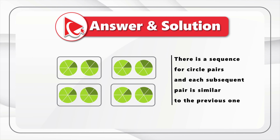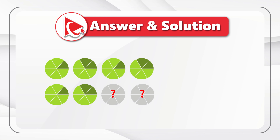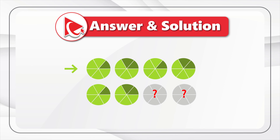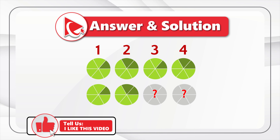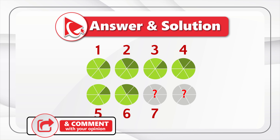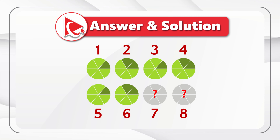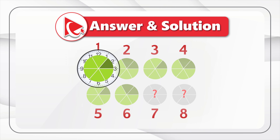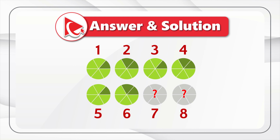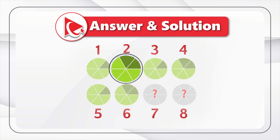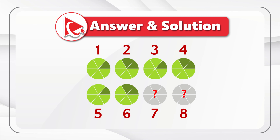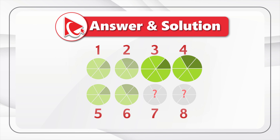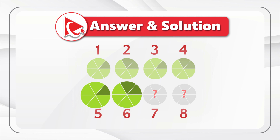Let's take a close look. To better understand the pattern, let's give each circle a unique number. Starting with the top row, the numbers would be 1, 2, 3, 4, and the bottom row circles will have numbers 5, 6, 7, and 8, with 7 and 8 being our missing pair. If you look closely at circle 1, there is a dark section at the 2 o'clock position. Circle 2 has two dark sections — one at noon and another at 2 o'clock. A similar pattern appears in circles 3 and 4, and circles 5 and 6 also mimic the same pattern.